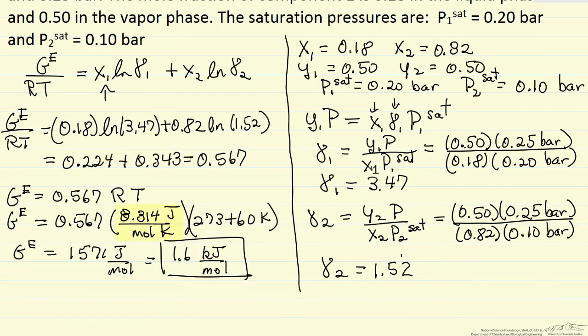Notice I've used gas constant in joules per mole Kelvin, and then I converted temperature to absolute temperature by adding 273 to the 60 degrees centigrade. And then I reduced it to two significant figures: 1.6 kJ per mole is the excess Gibbs free energy for this liquid mixture.